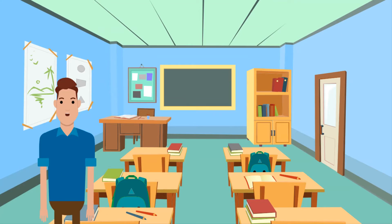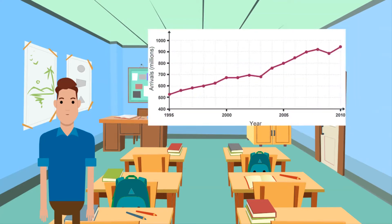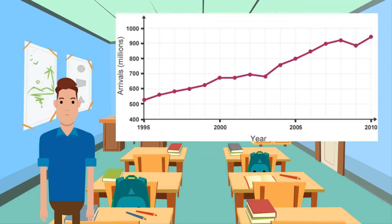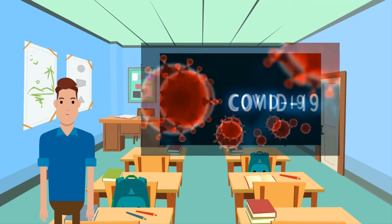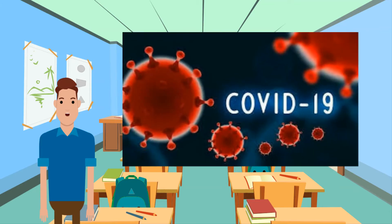Let's talk about the growth in tourism. In 2010, 940 million people were recorded as arriving in a country from abroad because of tourism. This is worth $919 billion, making tourism one of the world's largest industries. But now, amid the global pandemic with borders closed, this figure is rapidly shrinking, placing a huge economic pressure on countries with large portions of their GDP coming from tourism.